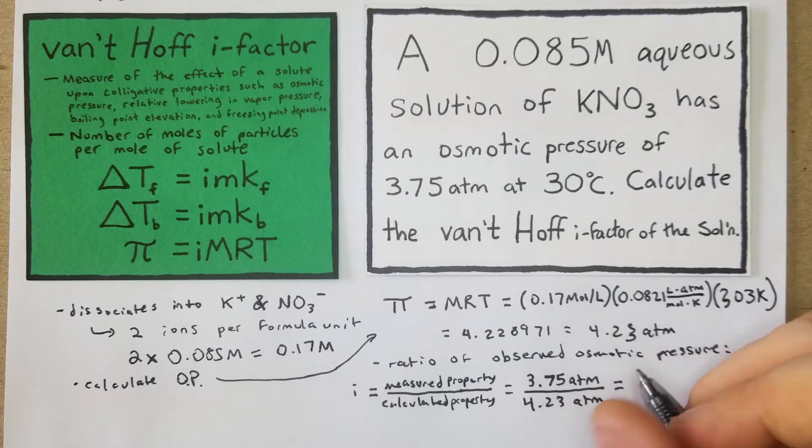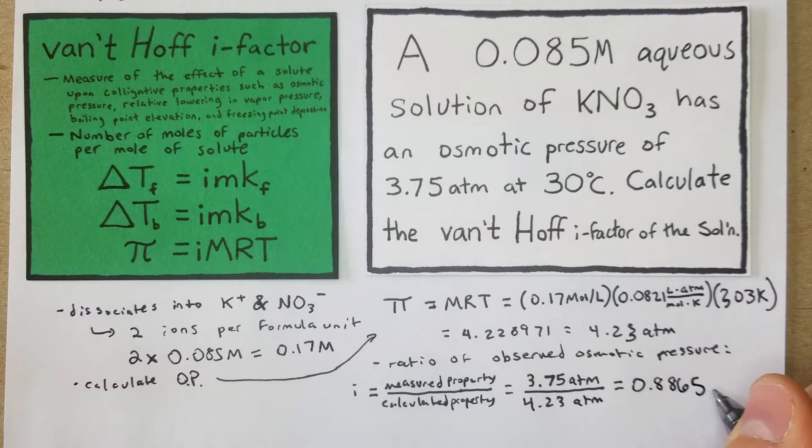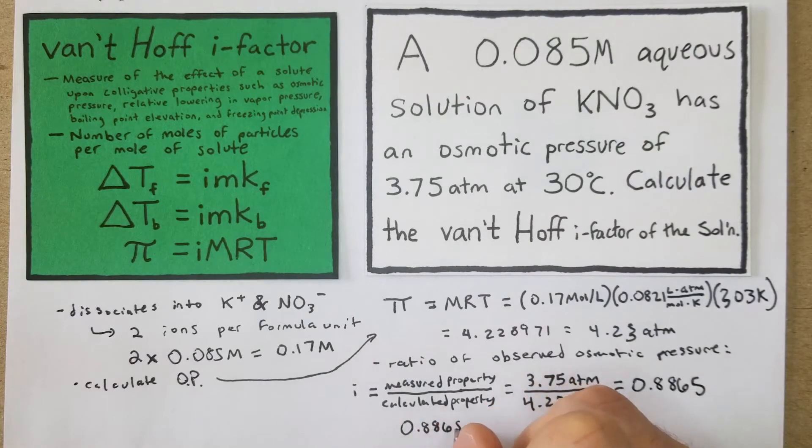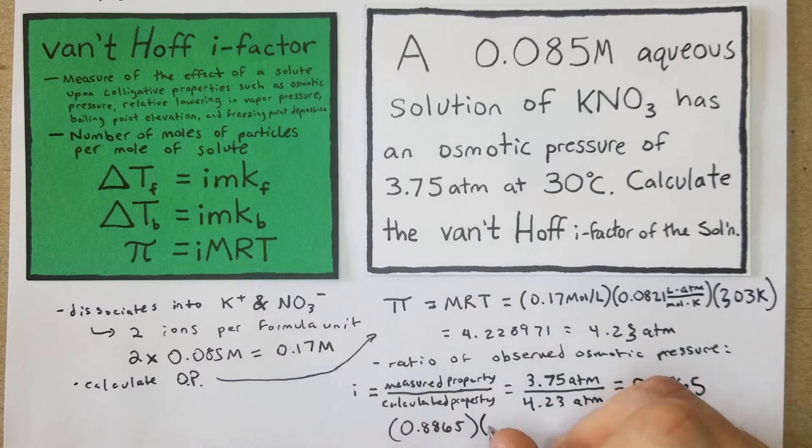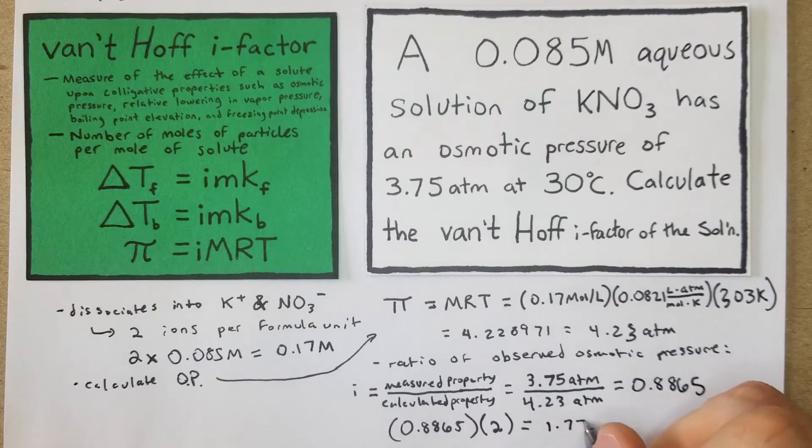So for that we're going to get 0.8865, and then we'll take that 0.8865 times two ions per formula unit, which equals 1.773 particles per mole of KNO3 dissolved. I wrote it out like that so that we could understand exactly where we are.